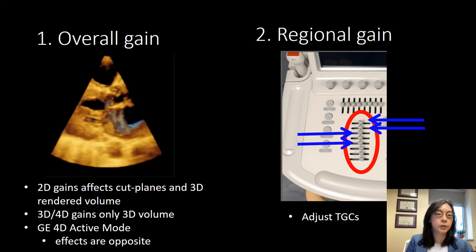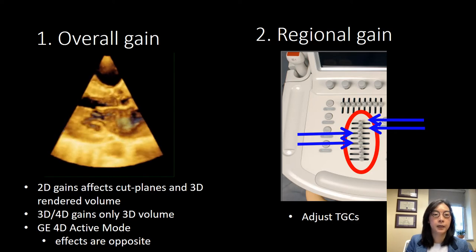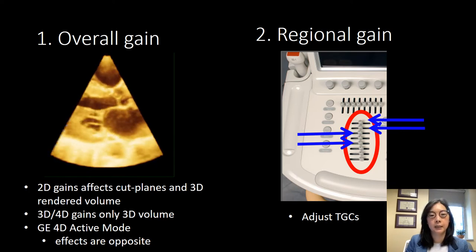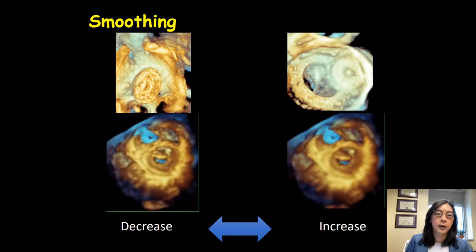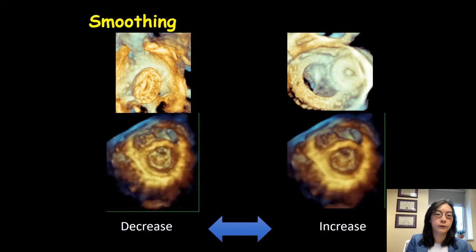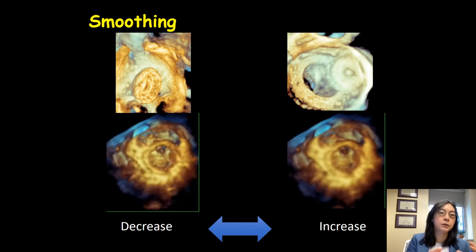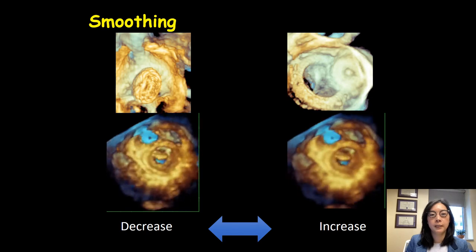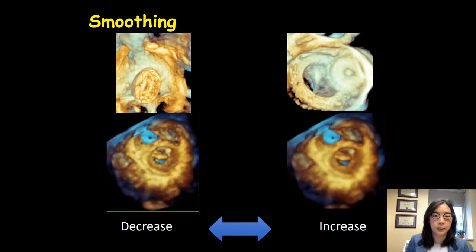There are two ways to adjust gain: overall gain, which changes gain everywhere in your data set evenly, and regional gain, which is usually only adjustable before you acquire your data set. For regional gain on TTE I decrease the gain in the left atrium when looking at the mitral valve and increase it at the level where the leaflet tissues are. Smoothing lets you see the fine details of the structure. If you decrease smoothing too much you end up with too much granularity and noise. If you increase it too much you smooth out all the details and miss finer structures.